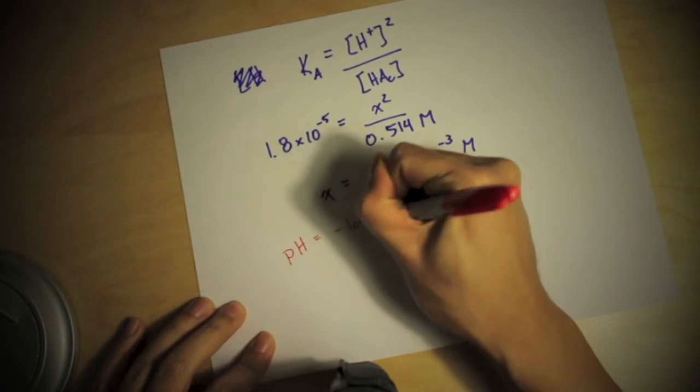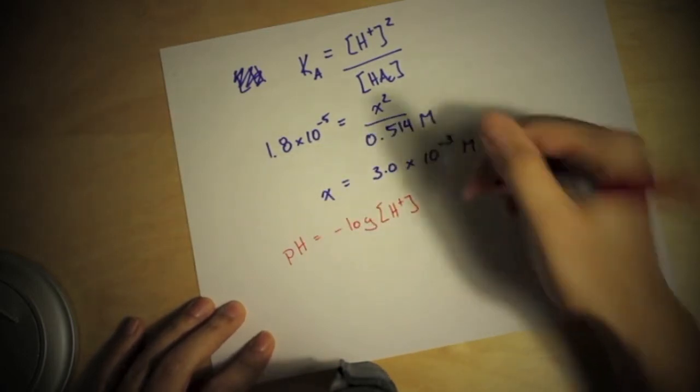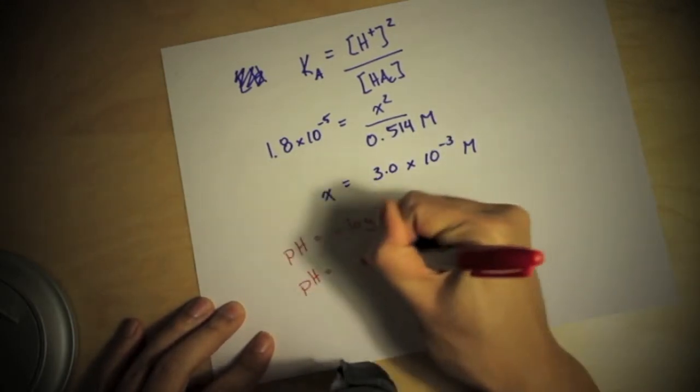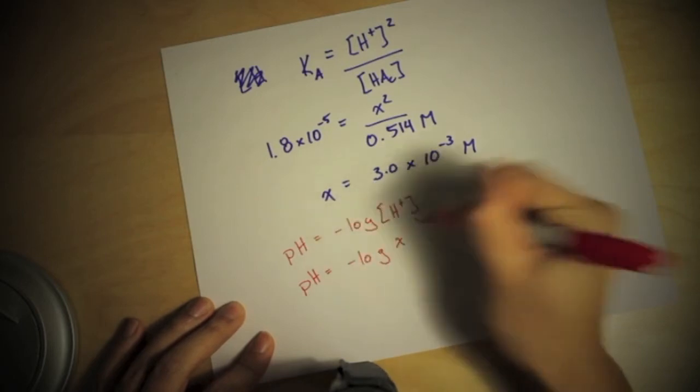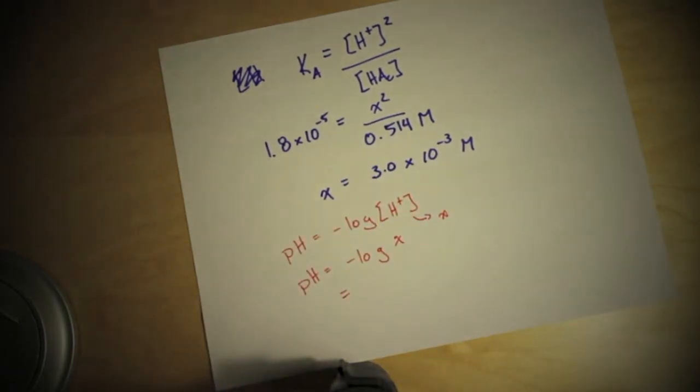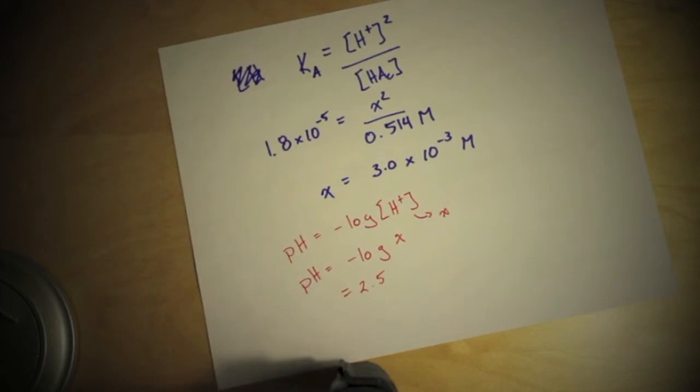Well knowing that, I know that pH is equal to the negative log of the amount of hydrogen acid things that there are. But this thing right here is just x, so that's pH equals the negative log of x. Plug that into your calculator and you get a pH of about 2.5. That's really acidic, like super acidic.